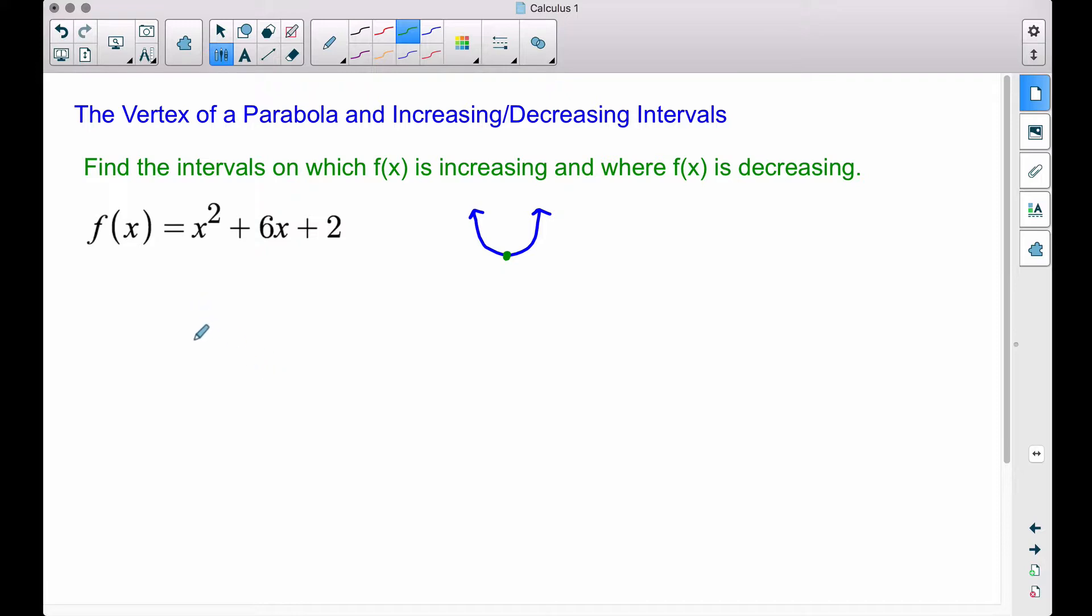So thinking back to your college algebra days, you can find the x value of your vertex by using the formula negative b over 2a, given your quadratic is in standard form. And it is in this case. Therefore, if we take negative b, that's going to be the 6, recall the standard form of a quadratic is ax² + bx + c = f(x). So therefore, our negative b will be -6 over 2 times a, which is 1, and that's going to be equal to -6 divided by 2, so we have -3.